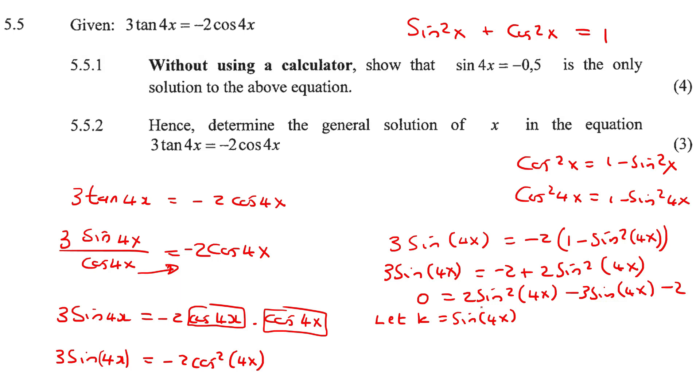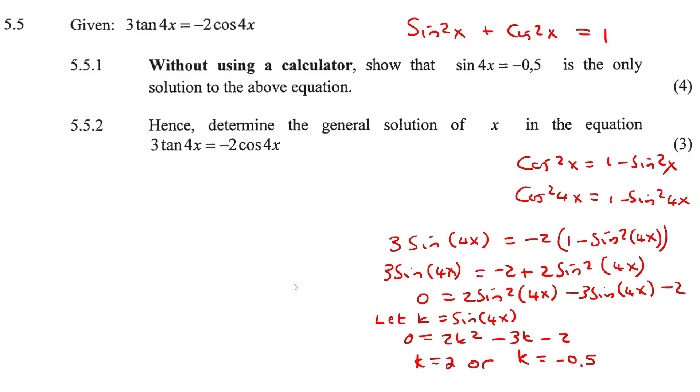If not, you could say let k equal to sin 4x. Then this would be k, and this part here would be k squared. So you'd end up with 2k squared minus 3k minus 2. And so you can use the quadratic formula. And if you use the quadratic formula, you should end up with k equals 2 or k equals negative a half or negative 0.5. But remember that k is actually sin 4x. So we're going to go sin 4x equals 2 or sin 4x equals negative 0.5.